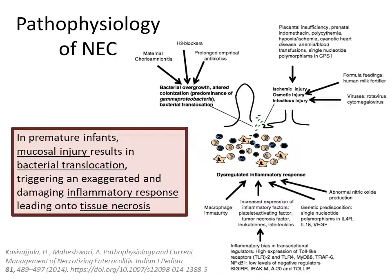Going on to pathophysiology: some insult causes a mucosal injury in the bowel, which leads to bacterial translocation, and this in turn triggers an exaggerated and dysregulated inflammatory response causing tissue damage and necrosis. So there is something — whether ischemic, osmotic, or infectious — that causes mucosal disruption, allowing bacteria to invade the bowel wall, where a dysregulated inflammatory response leads to the actual tissue necrosis.